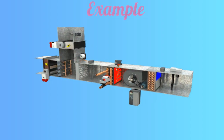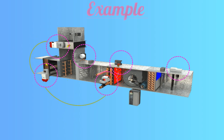For better understanding, look at the example on the screen. This is called an AHU — Air Handling Unit. You can see all the field devices are circled. These three are damper actuators: the first is installed on the fresh air, the second on the return air, and the third is installed as a valve actuator. This is a DPS — differential pressure switch — installed in the return line. This is a flow sensor. This is a temperature and humidity sensor, sensing temperature and humidity inside the duct.